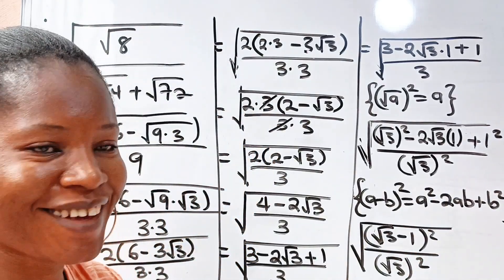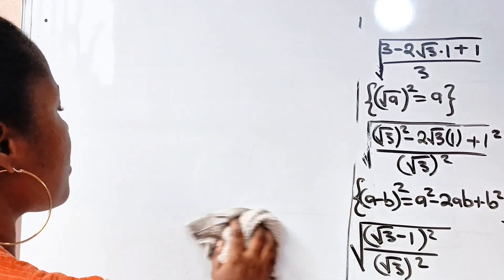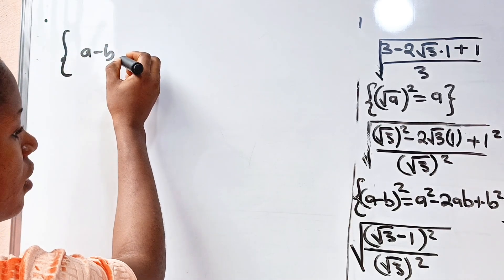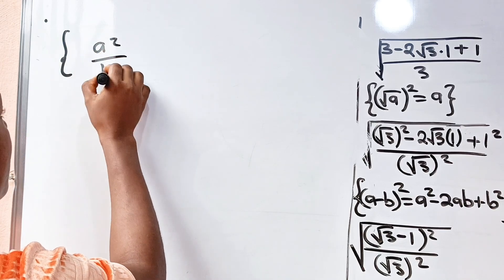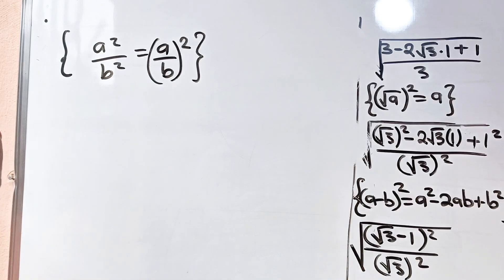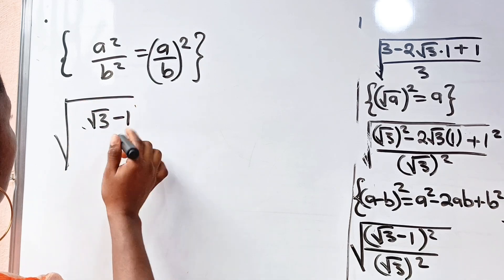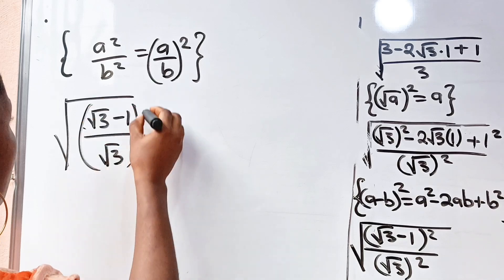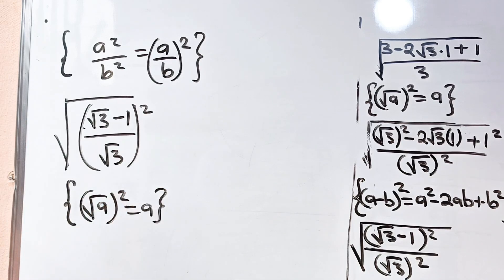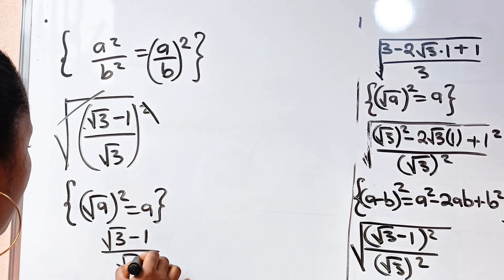We are almost there. Remember that a squared divided by b squared is equal to a divided by b, raised to the power of 2. So that means we can write this as the square root of root 3 minus 1 divided by root 3, all squared. Now remember that square root of a squared is equal to a. So we have square root of 3 minus 1, divided by square root of 3.